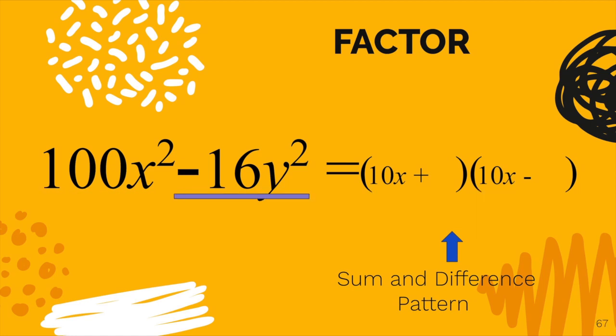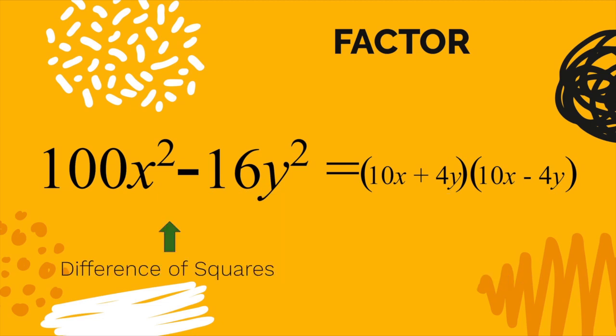Don't worry about the minus sign here. Just the 16y squared. And of course that would be 4y times 4y. So we're going to put that in the blank also. So in other words, 100x squared minus 16y squared factors into 10x plus y and 10x minus y, which is called a sum and difference pattern.